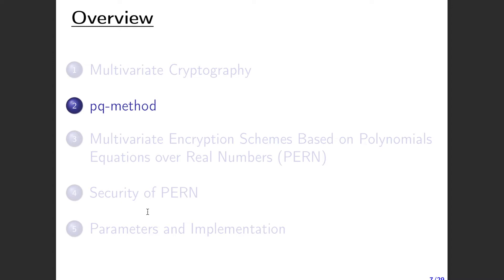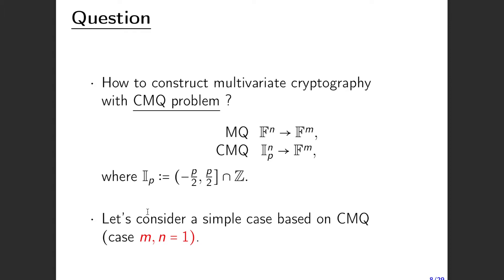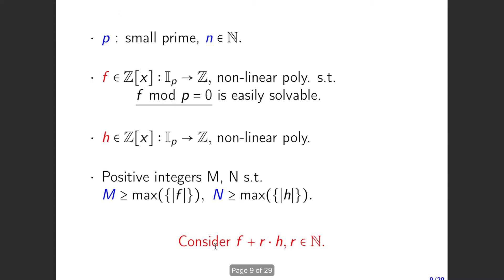I will introduce the PQ method for constructing multivariate encryption schemes based on the constrained MQ problem. First, let's consider how to construct multivariate cryptography using this constrained MQ problem. As a simple case, consider one polynomial in one variable. We start with a very small prime p and a positive integer n, then choose a nonlinear polynomial f with integer coefficients such that f modulo p equals n and is very easy to solve.